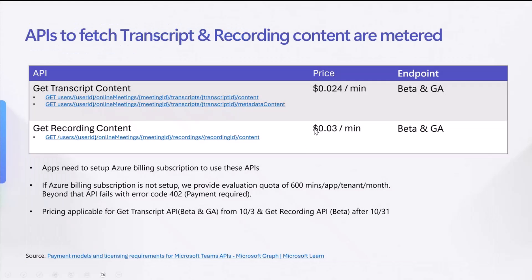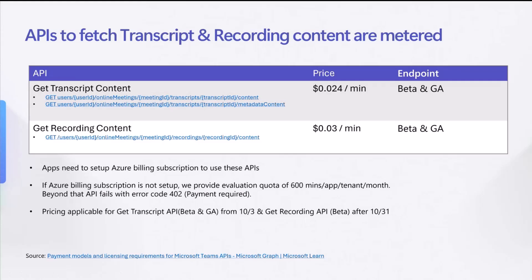Another important thing about these APIs is they are going to be under a pricing meter. Particularly the get transcript content and the get recording content APIs, we are going to price them based on the minutes of the transcript content or the recording content. Both the beta and the GA endpoints will be priced. To use these APIs, your app will need to have an Azure billing subscription — these are all well documented. Once you have the Azure billing setup, you can use the APIs at these prices. We have already started the pricing for the get transcript API in both the beta and GA endpoints, and we are going to start the pricing for the get recording APIs in early November.